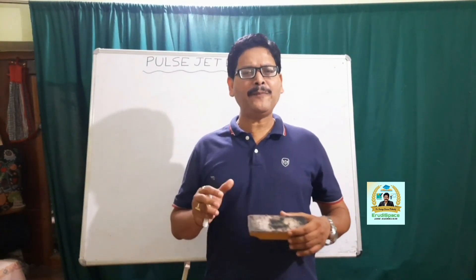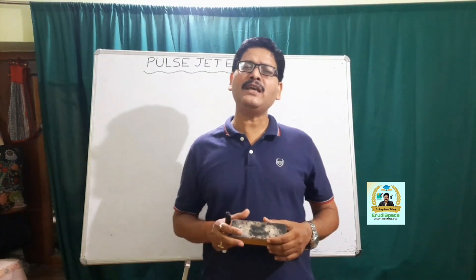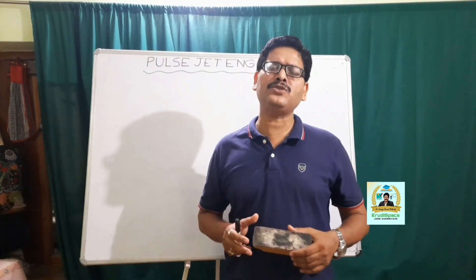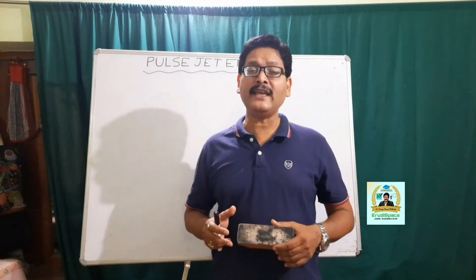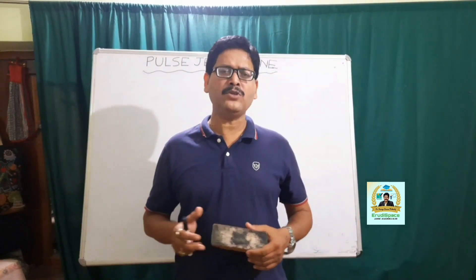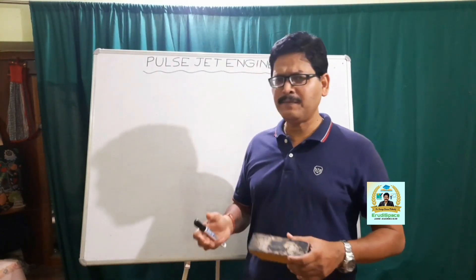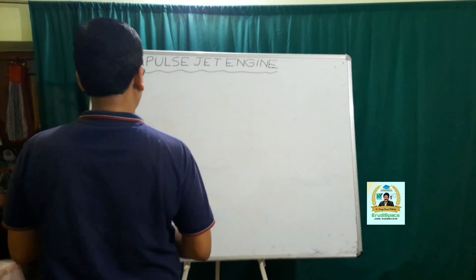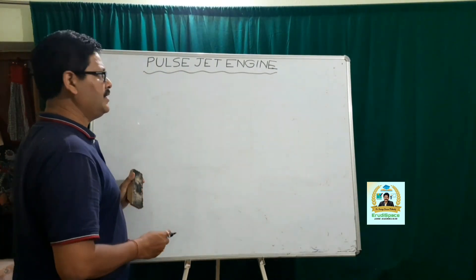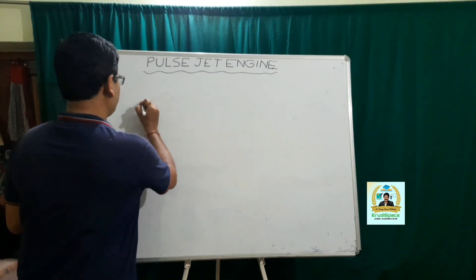Apart from that, in the pulse jet engine we have a mechanically operated rubber clapper valve grid which actually allows or restricts air into the combustion chamber. So let me first draw the schematic diagram of the pulse jet engine.